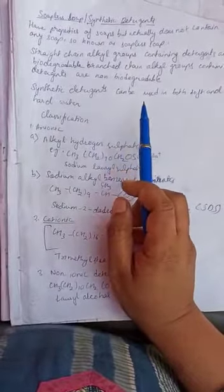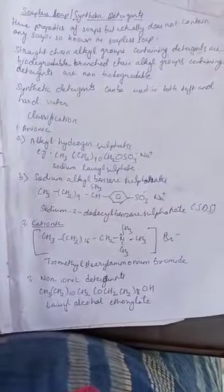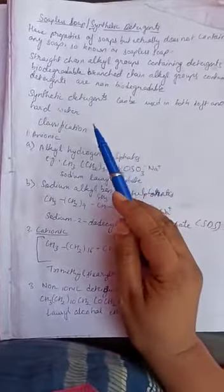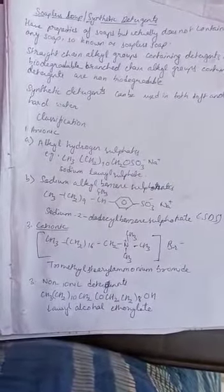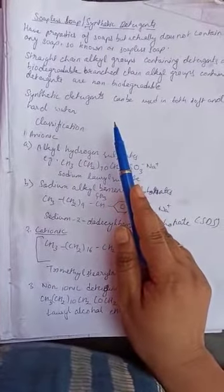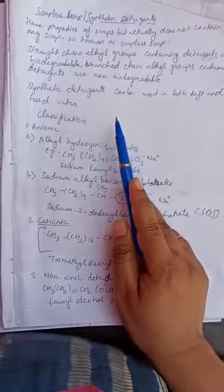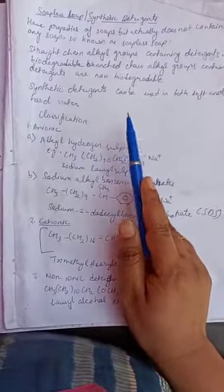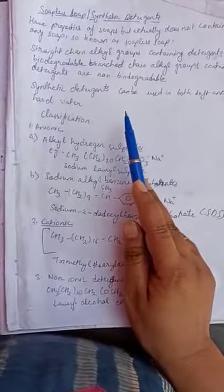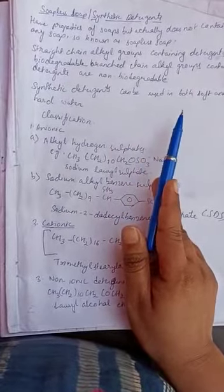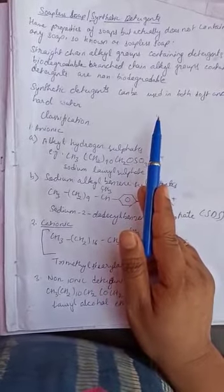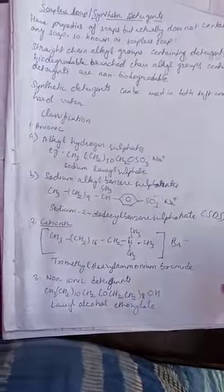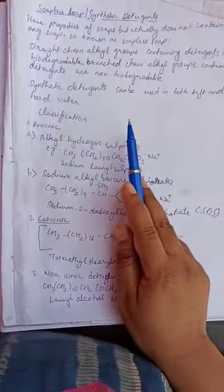Synthetic detergents can be used in both hard water and soft water. As you studied in the earlier video, soaps can only be used in soft water, not in hard water. Synthetic detergents can be used in both. In homes, you must have observed that most of the time detergents are used in place of soaps for washing clothes, as detergents are more effective in cleaning clothes and also do not affect the fabric of the clothes.